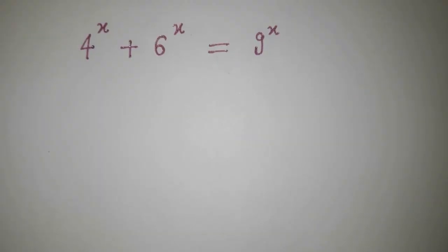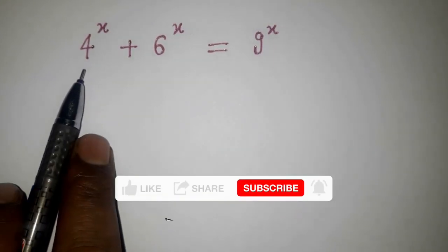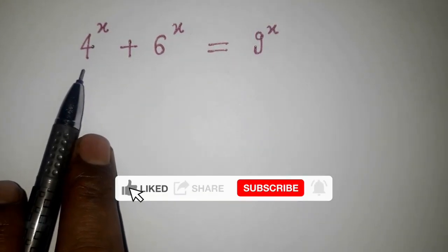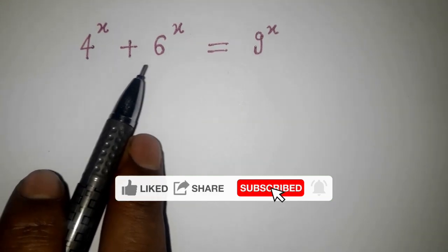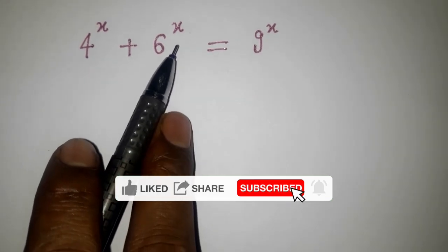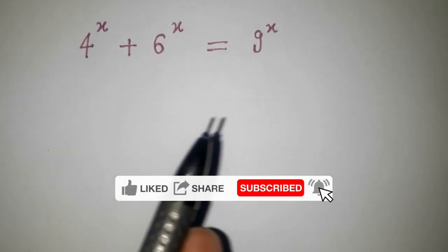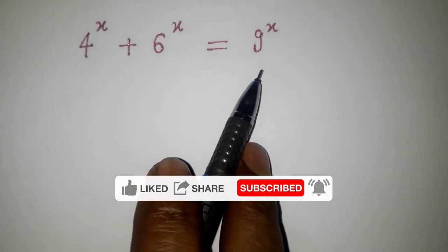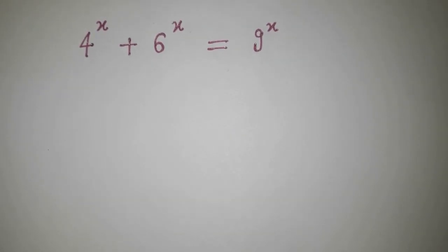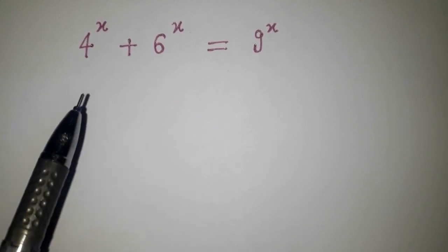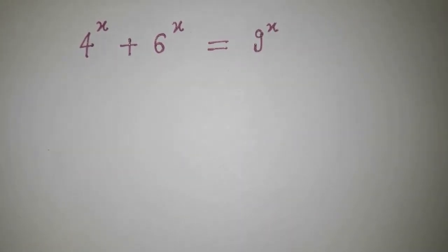Welcome back to Triple X Learnings. Today we have this question: 4 to the power x plus 6 to the power x equals 9 to the power x. How can we solve this question?